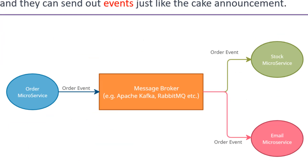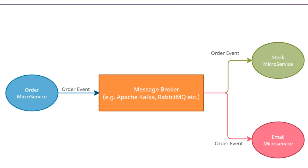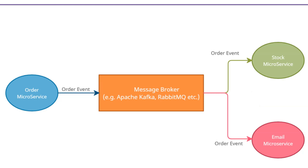In a similar way, event-driven architecture in technology is like this party scenario. Instead of people, we have different parts of a software system that communicate with each other. These parts can be like small programs, functions, or microservices, and they can send out events just like the cake announcement. When one part of the software system sends out an event, other parts that are interested in that event can react to it. They might perform certain actions or tasks based on the event they received. This communication and reaction between different parts of the software happen without those parts having to constantly check each other.